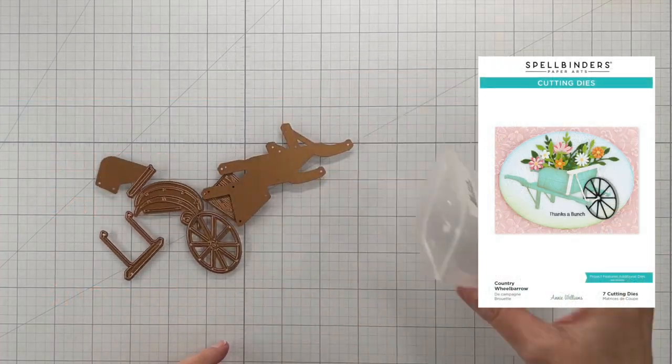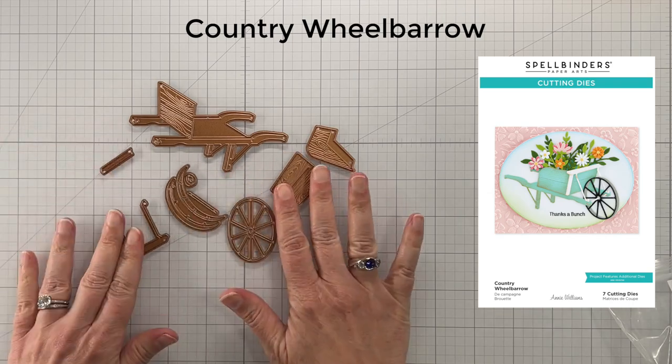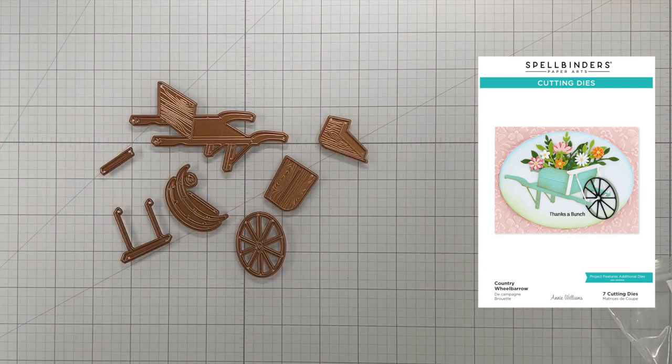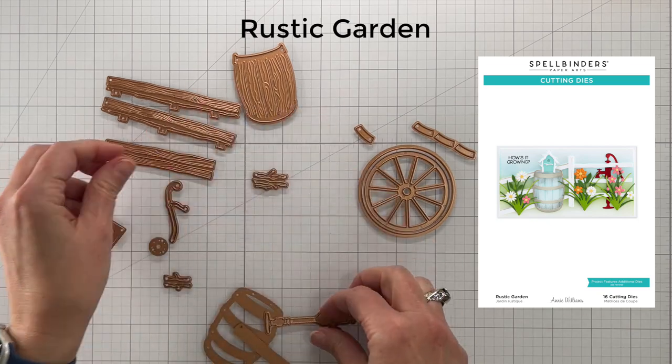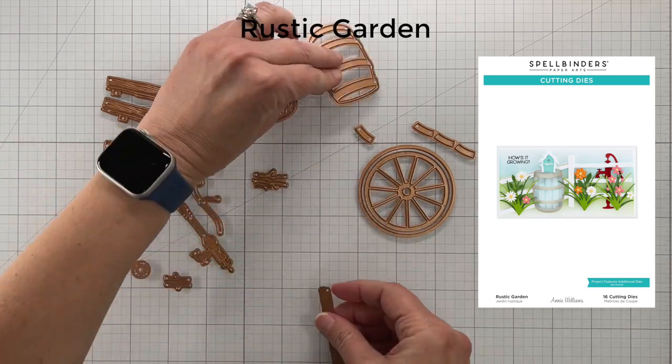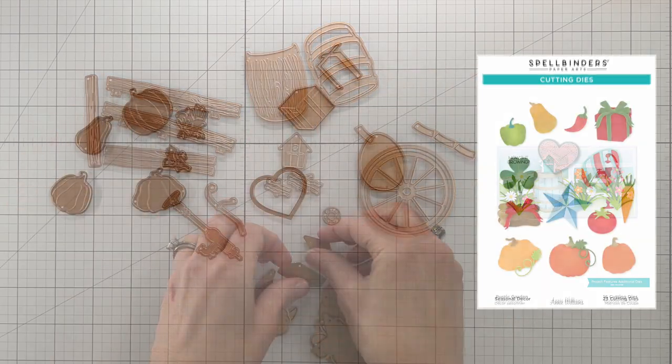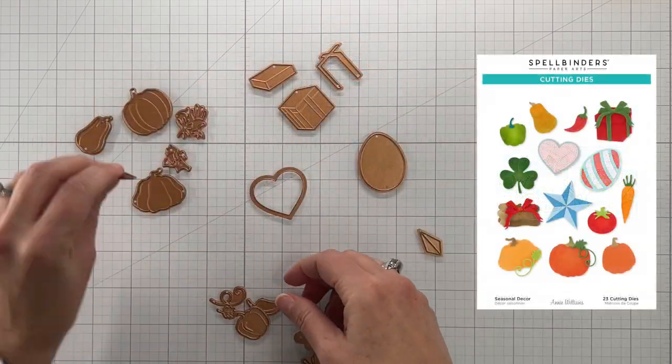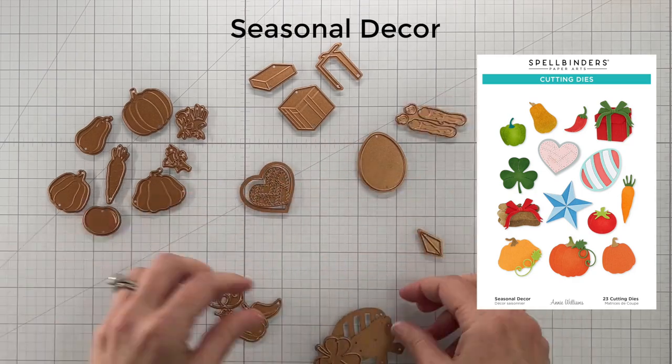Today we're going to be using this new collection from Spellbinders. It's Country Road and there are lots of die sets and a stamp set. I'm showing you all of the different die sets that we're going to be using today - I think there are four of them - and they work so well together or separately.